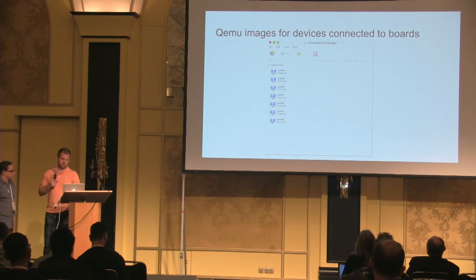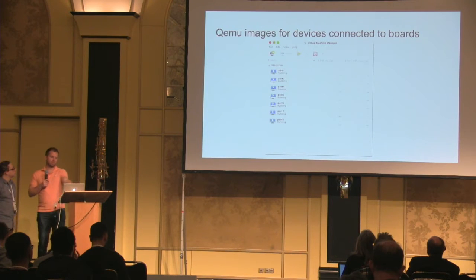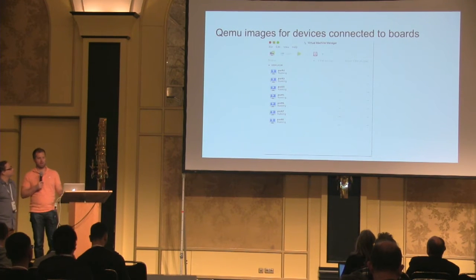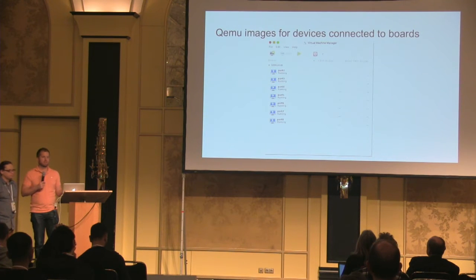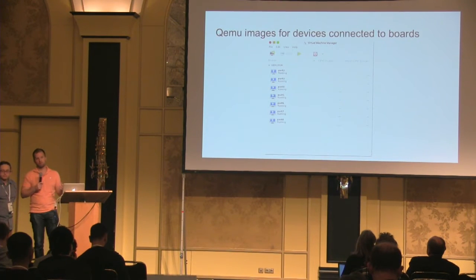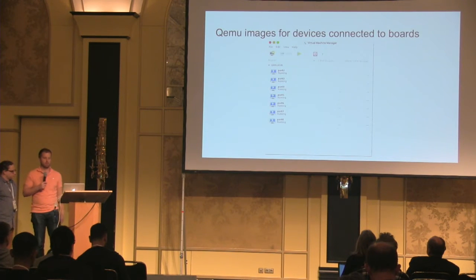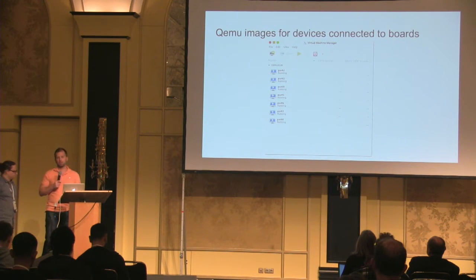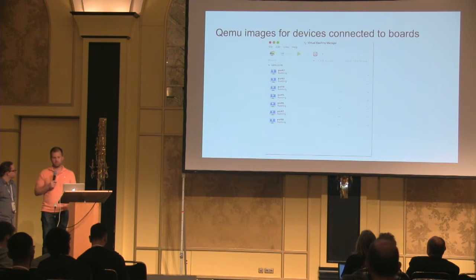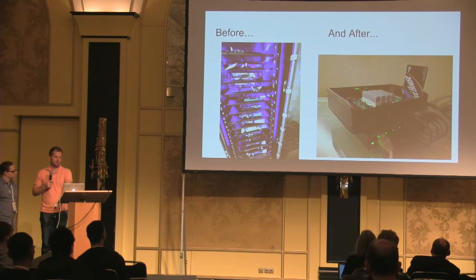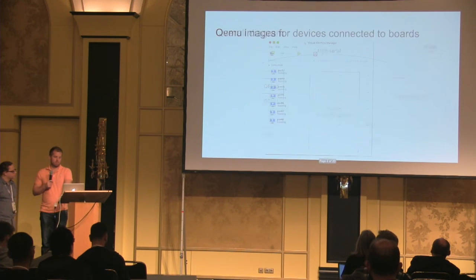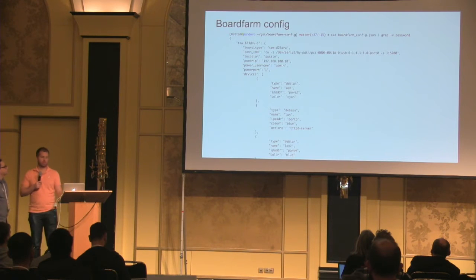The nice thing about QEMU is it's very well supported and fast. You can do other interesting things like map PCI devices into a guest, so you could put a Wi-Fi card in your desktop, map it into a guest, and have that guest drive Wi-Fi testing for your boards. The idea is to find ways to enable this and make it cheap for people to set up a station on their desk.